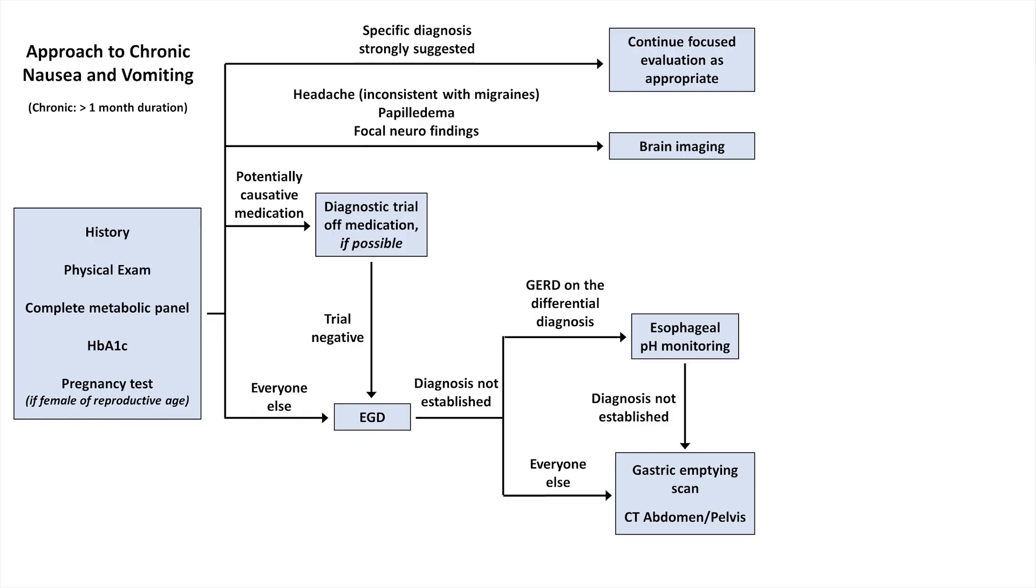By now, most patients will have a diagnosis established. However, if not, and if the symptoms are severe, some additional testing that might be considered include CT or MR enterography and a wireless motility capsule. This is also the point in time when some patients might be given a diagnosis of chronic nausea and vomiting syndrome, at which point the workup usually stops.